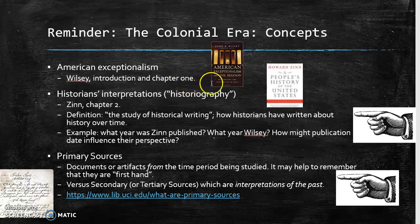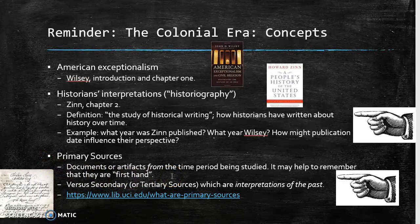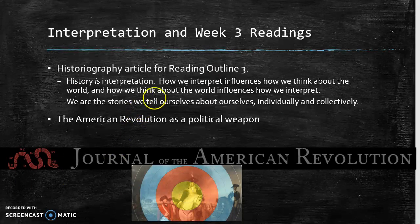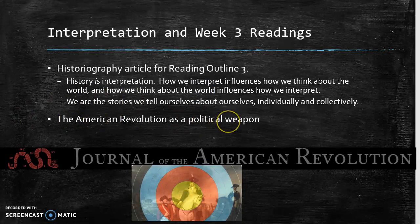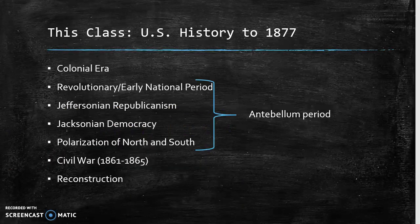Something else we've talked about is historiography. You've already gleaned that Howard Zinn has a very different take on the past than the high standard of American exceptionalism that John Wilsey writes about. We've also covered the concept of primary sources, which are documents from the time period being studied — first-hand accounts. In week three, you read a historiography article about the American Revolution and talked about the idea that the revolution is quite often used as a political weapon even today.